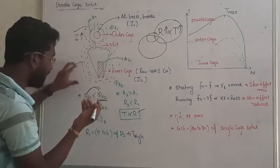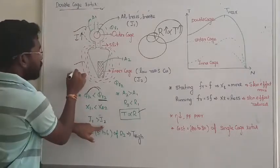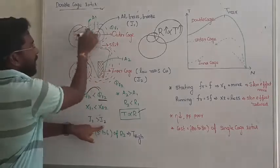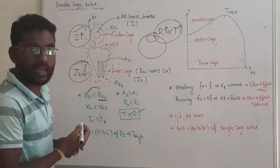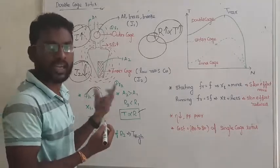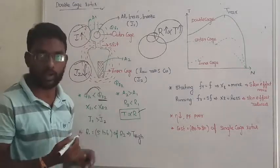So we have less current in the inner cage, I2. The current of the inner cage I2 is very less when we are comparing it with the outer cage. At starting time, in double cage rotor also we will have skin effect. Skin effect is current non-uniform distribution.